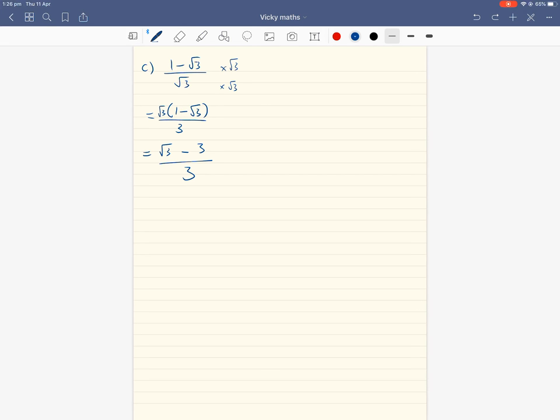So rationalizing the denominator means no surds on the bottom. So all you need to do is look at what surd is on the bottom, multiply top and bottom with that surd on the bottom. And then, hopefully, things will be lovely and can cancel out and can be simplified. So to-do list, exercise 3E.